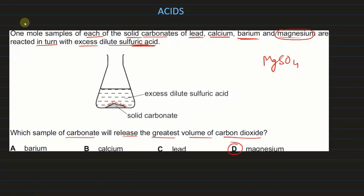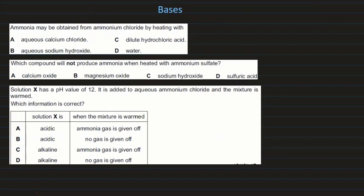Now let's see some questions from bases. Ammonia may be obtained from ammonium chloride (NH₄Cl) on heating with a base. Ammonium salts react with bases — metal oxides and metal hydroxides — to give off ammonia. Calcium chloride is not a base, but sodium hydroxide is — so that is the answer, as hydroxides react with ammonium salts to give ammonia gas.